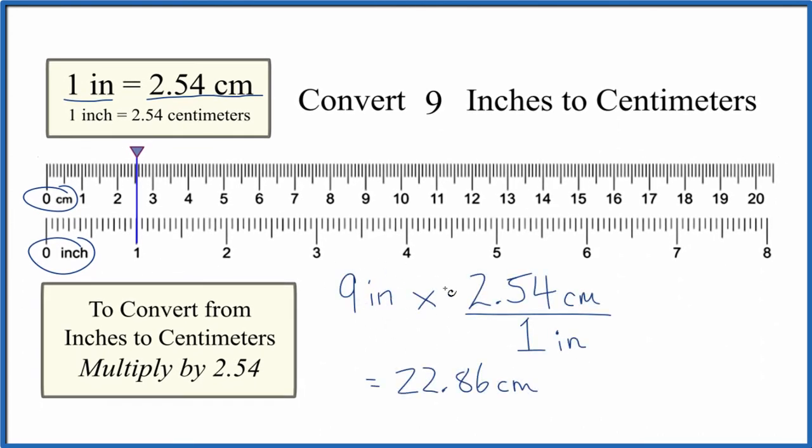So we take our 9 inches times 2.54 and that's centimeters per inch. So we cancel out inches, we're left with 22.86 centimeters in 9 inches.